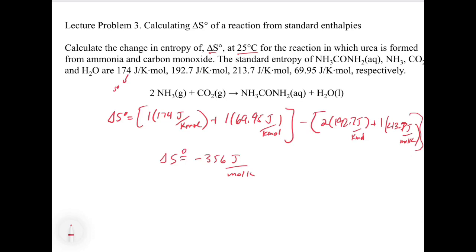When we do the subtraction, we get delta S0 in this case of minus 356 joules per mole kelvin. It's exactly like Hess's law — you need to get those standard entropies. In textbook problems you may have to look them up in a table, but on the exam we'll either give you the table or give them to you in the problem just like this.